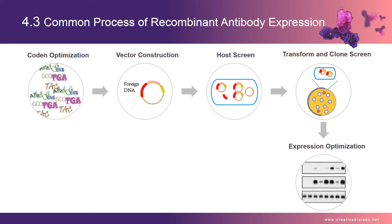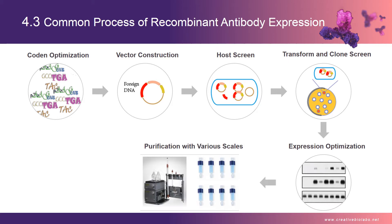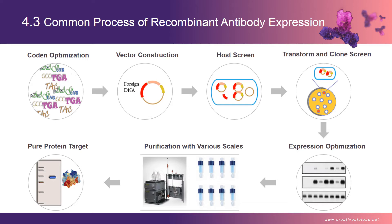It is common to produce some toxins or other harmful substances when expressing antibody in hosts. Therefore, protein purification is necessary in recombinant antibody production. Finally, based on the predicted structure, identify the function of the purified protein.